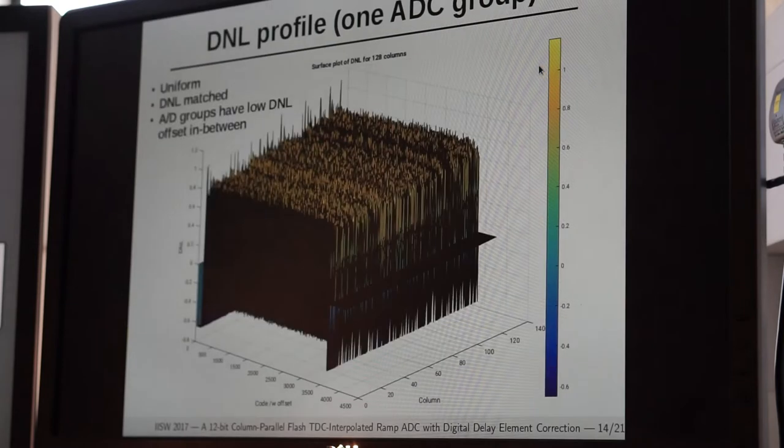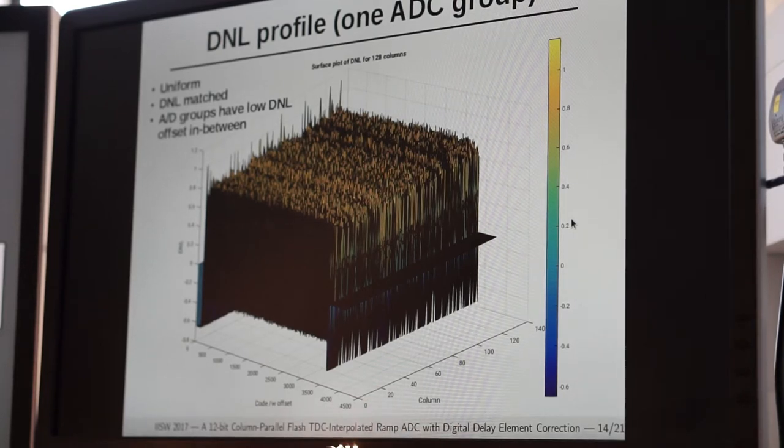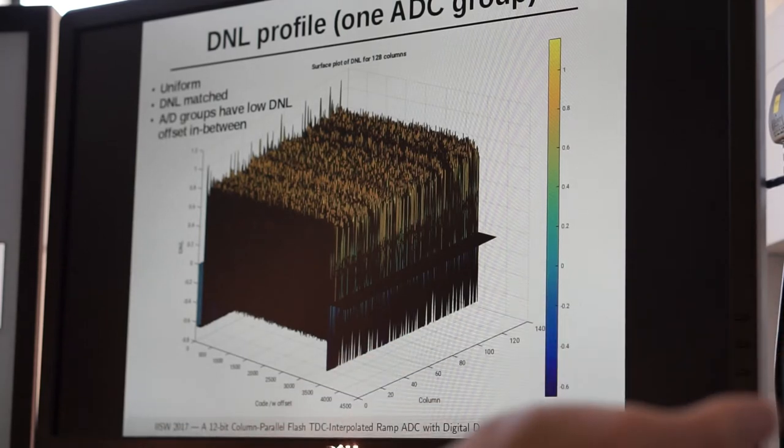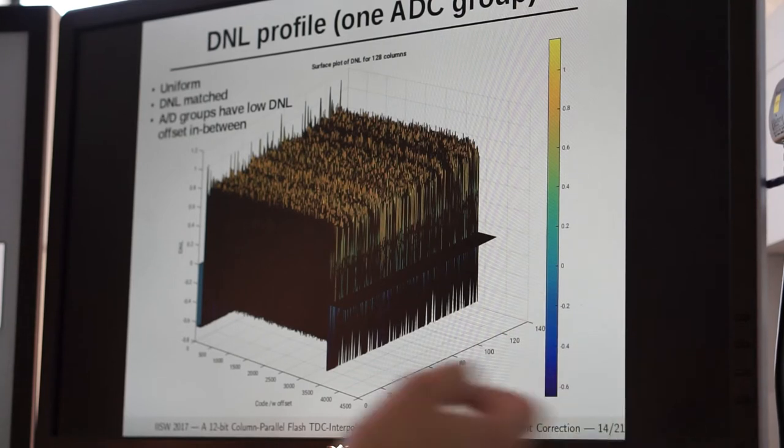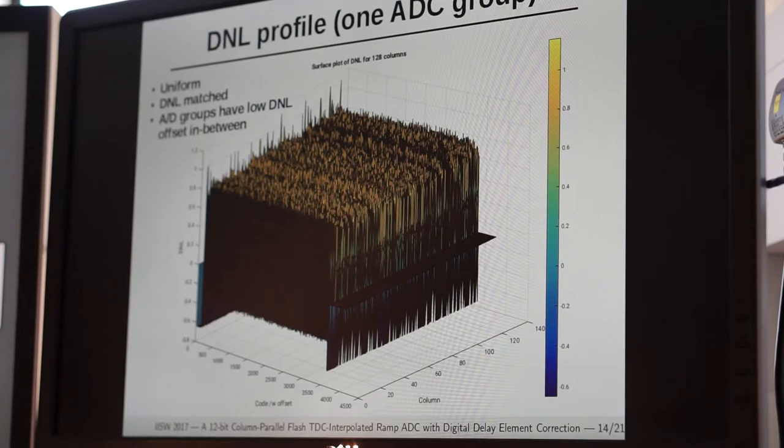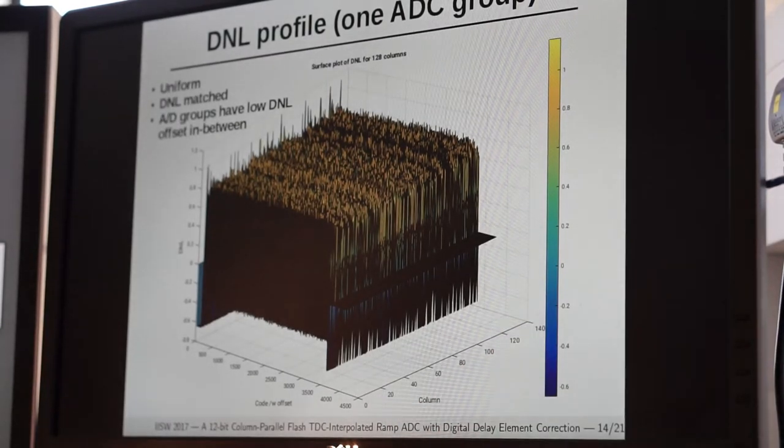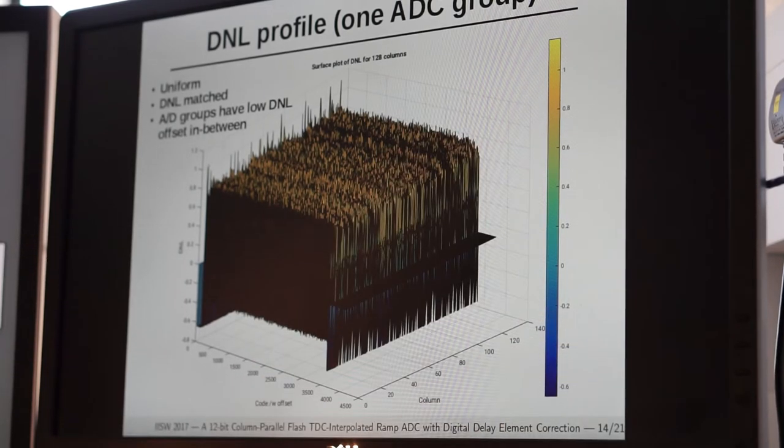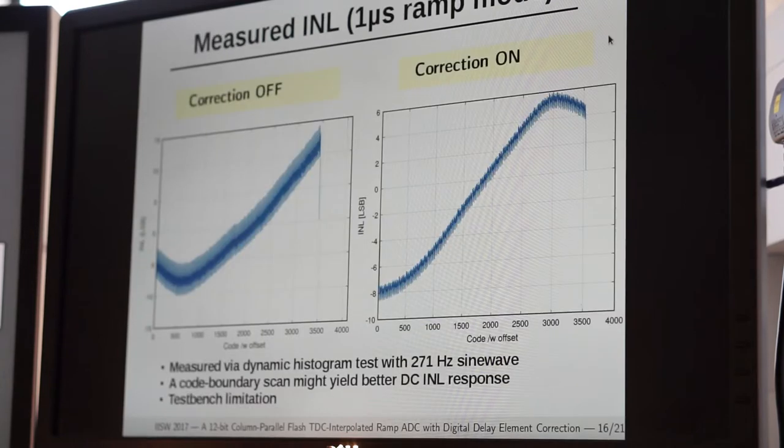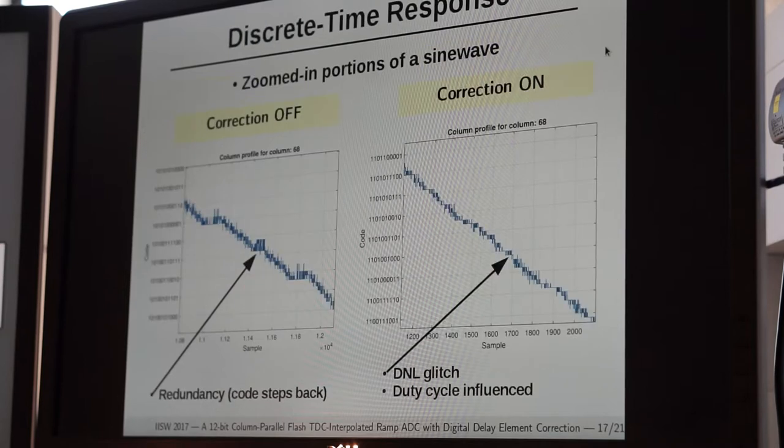We can take a look at the DNL profile of one ADC group. What I've tried to plot here is the differential non-linearity versus 128 columns of basically one ADC group. Although this plot might not be extremely representative because it's too dark and shows the DNL glitch kind of hiding the rest of the numerical noise-induced DNL, we can see that the columns are uniform and their DNL is sort of matched. That's why we have not used minimum-sized latches due to concerns related to matching of columns. When it comes to linearity, all of them are matched.